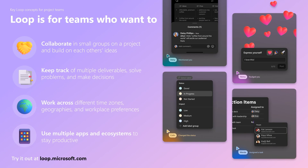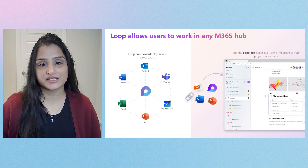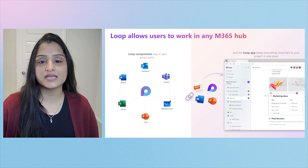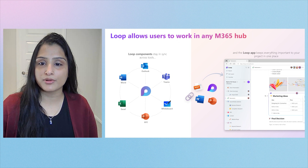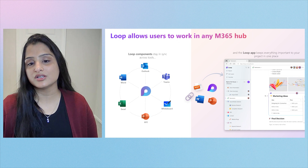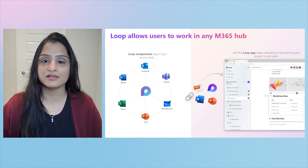Loop allows project teams to keep all their content in one shared space, making it easy to collaborate and build on each other's ideas. Engineering teams can co-author technical documentation with code snippets and visuals and track the overall progress of the project. They can create visuals and trackers within the app or insert live content from third-party apps. With Loop components, you're always connected to the Microsoft ecosystem. Loop allows you to work in any M365 hub, while the Loop app provides a dedicated shared workspace, and Loop components make it easier to share live content in chats and emails and collaborate on it.